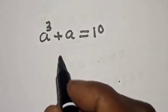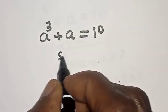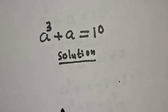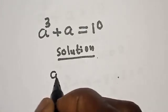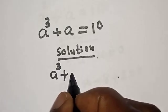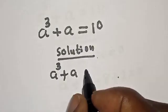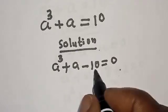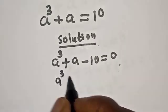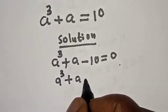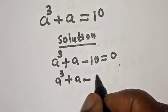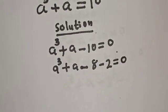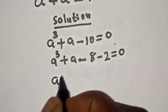Solution. We have a raised to power 3 plus a equals 10. Moving 10 to the left side gives a raised to power 3 plus a minus 10 equals zero. This can be written as a raised to power 3 plus a minus 8 minus 2 equals zero.